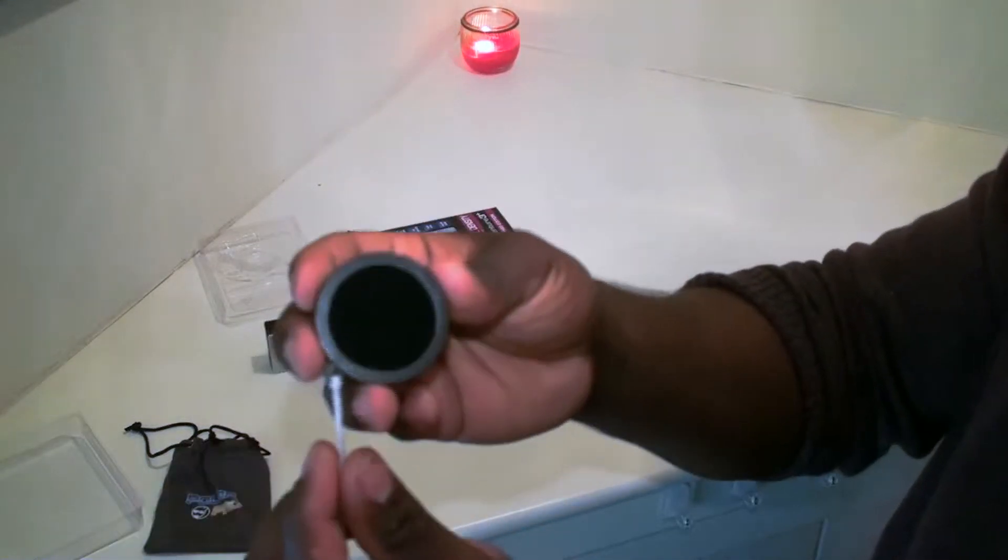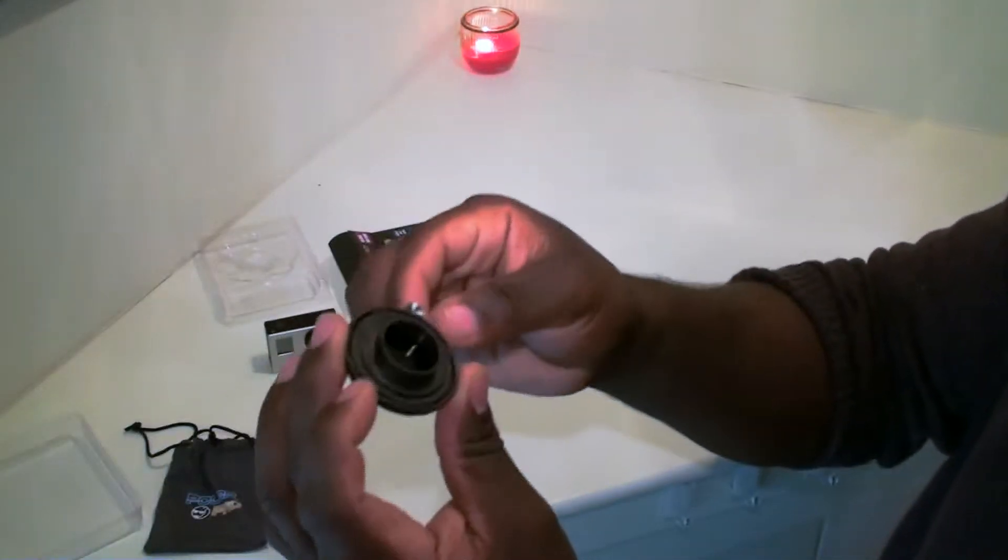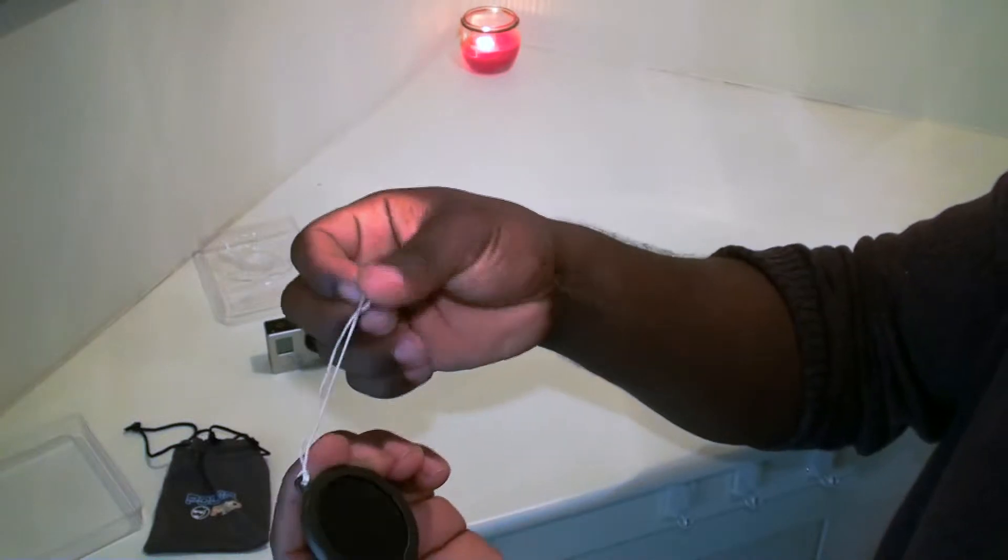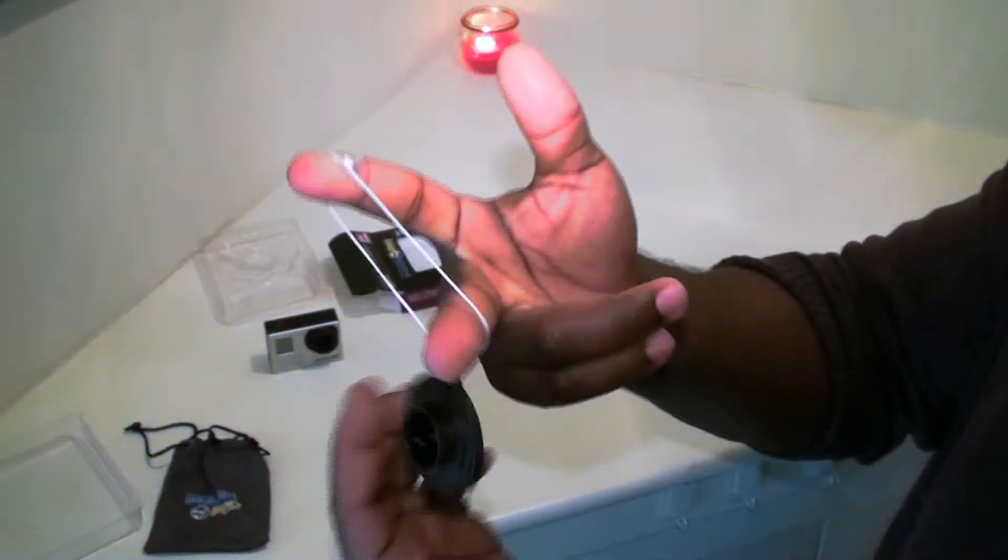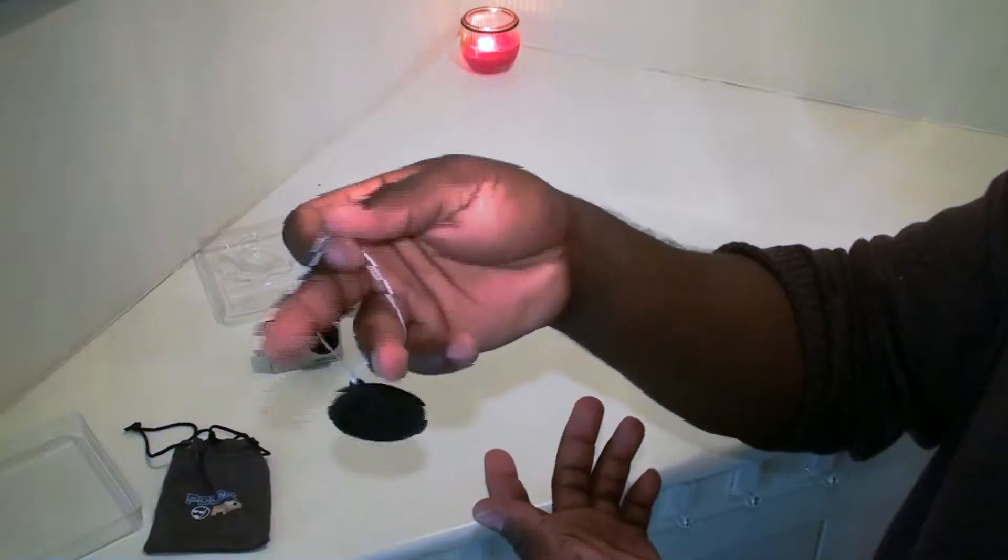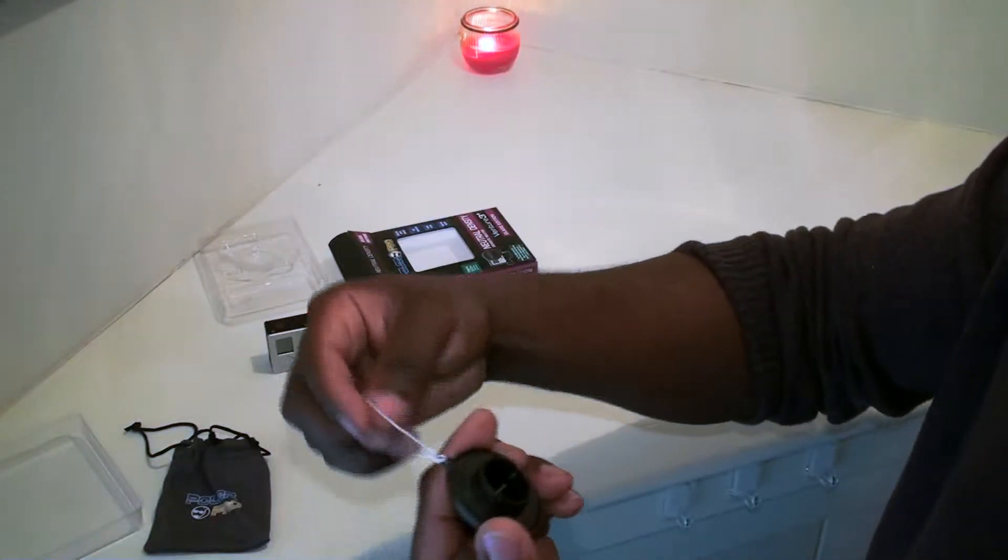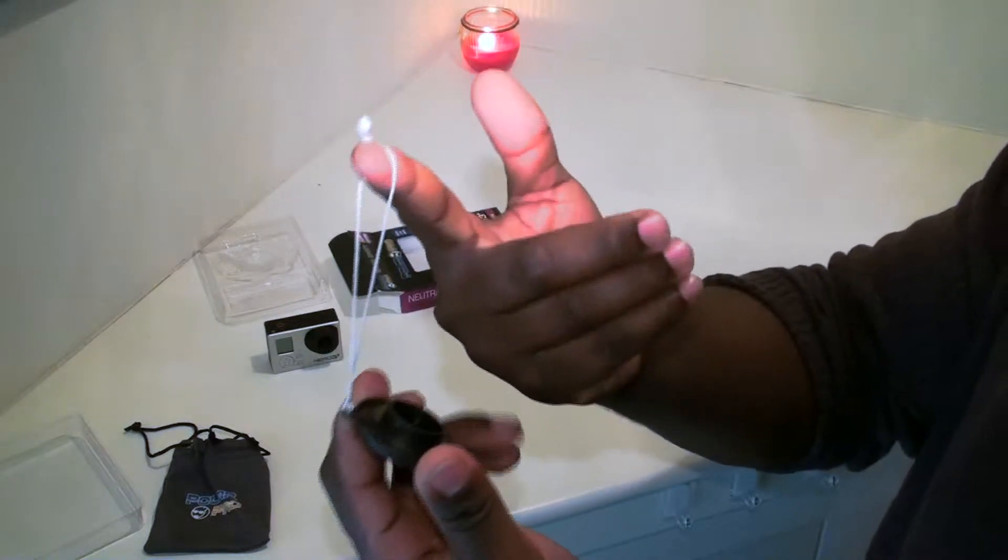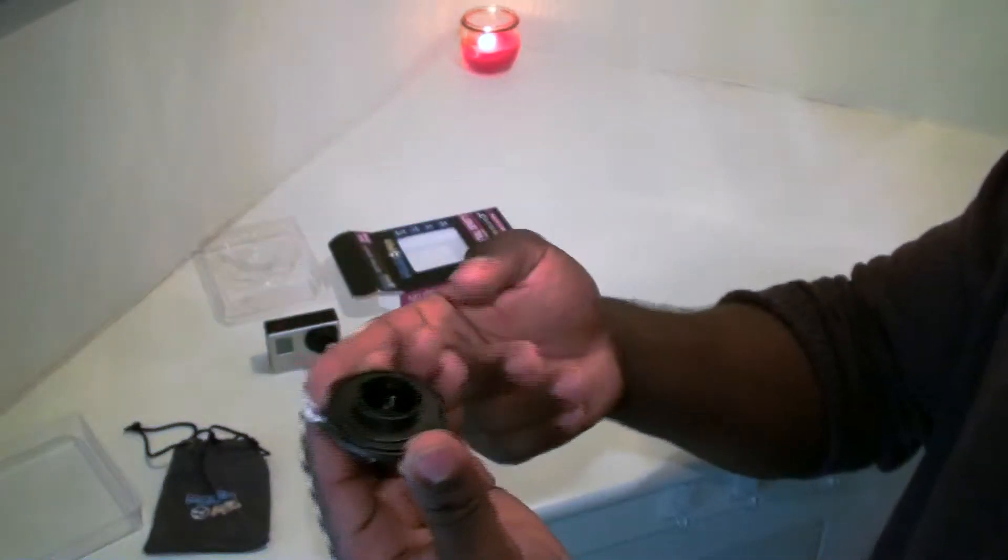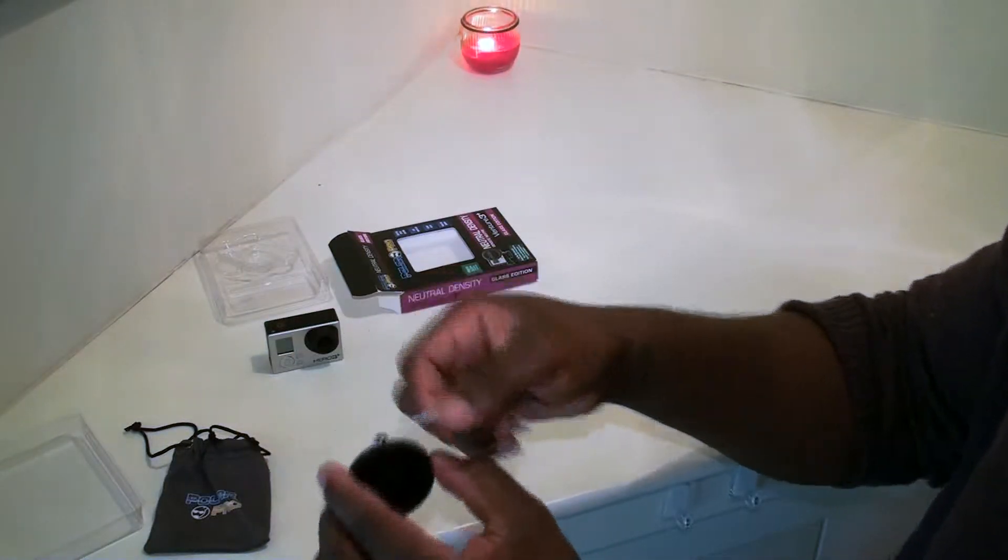There you have your filter. That's what it looks like. A little string on the side to I guess attach it to something or hang on to it so you don't lose it, or maybe tie it to your Phantom or something. I don't know if it falls off. I really don't know the use of the string. There's a GoPro you're gonna try to fit on here.